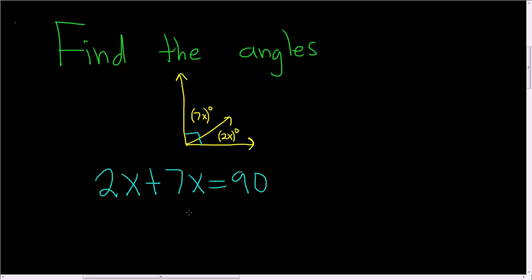So 2x plus 7x, well that's 9x and that's equal to 90. To solve for x we just divide by 9. So we end up with x equals 10.